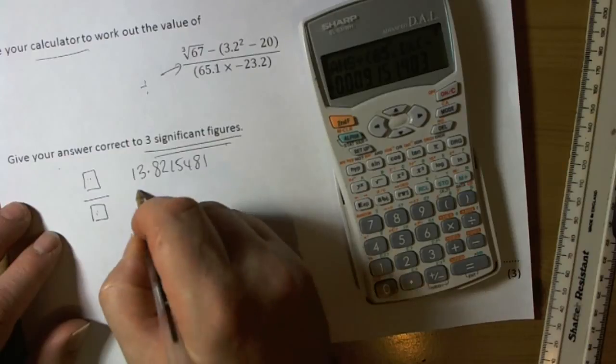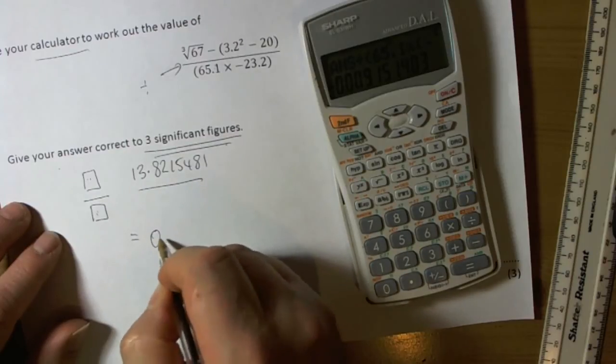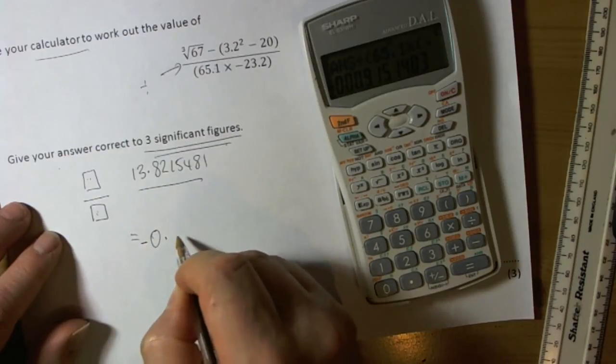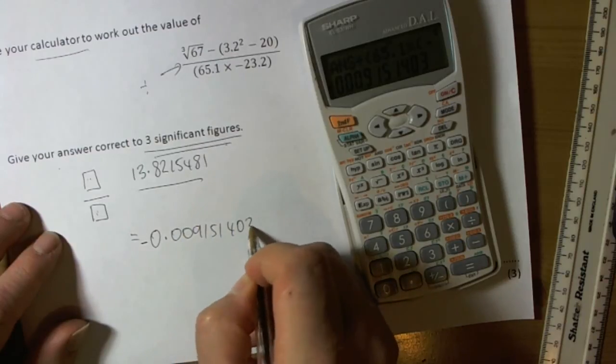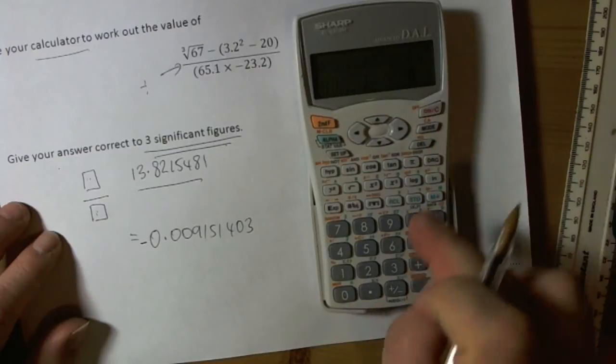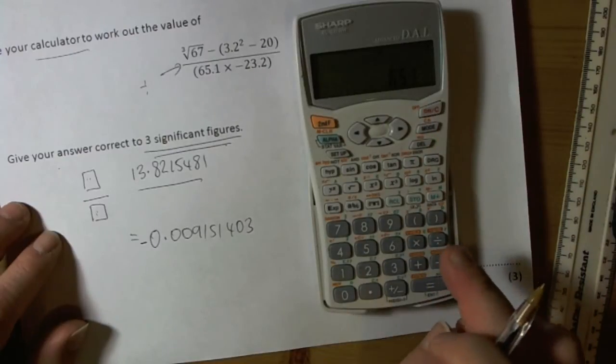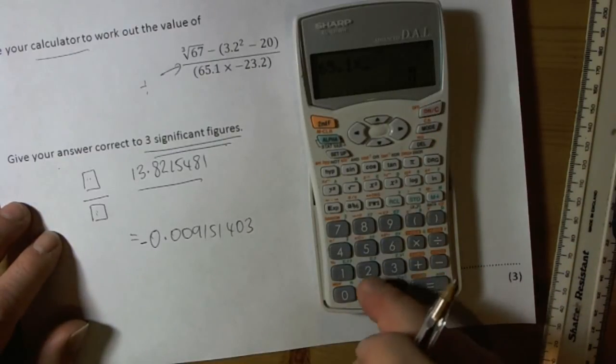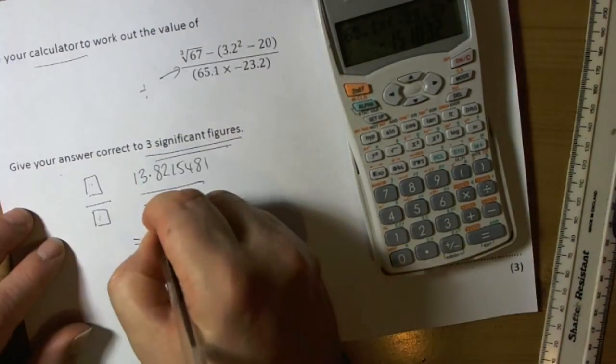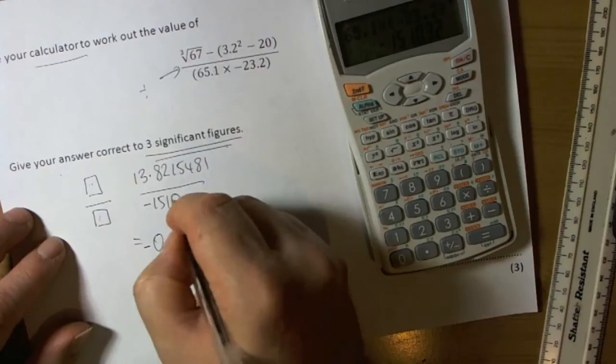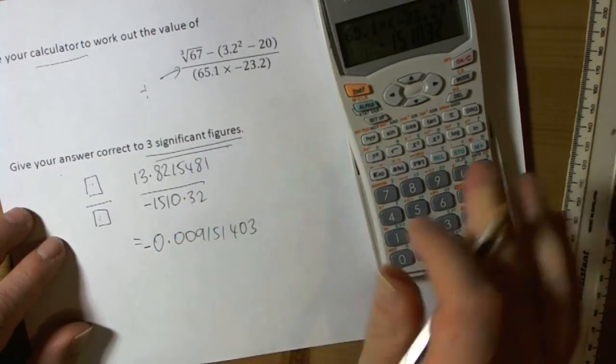Okay, so the final answer here was negative. Really important it was a negative sign there: -0.009151403. Now, just going to do that bottom part again, so 65.1 times 23.2 negative equals. So that gave me -1510.32.